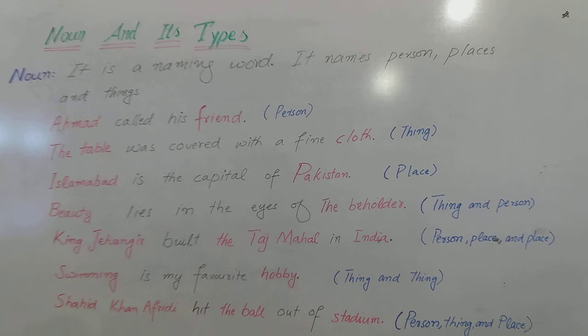'Swimming is my favorite hobby.' Swimming is the name of a phenomenon, an activity. Activities ke naam bhi hamaray paas nouns kehlatay hain. Aam tor par yeh '-ing' ke saath likhe jate hain aur inhe gerund ka naam diya jata hai. Hobby is also the name of an activity. So in this sentence we have two nouns: swimming and hobby.